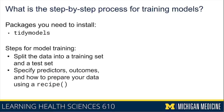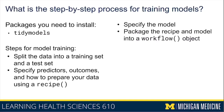We'll then specify predictors, outcomes, and pre-processing steps for our data to prepare it using the recipe function. We'll then specify the type of model that we want to use, as well as the objective of the model — so is it a regression model or a classification model? We'll then package the recipe and model into a workflow object.